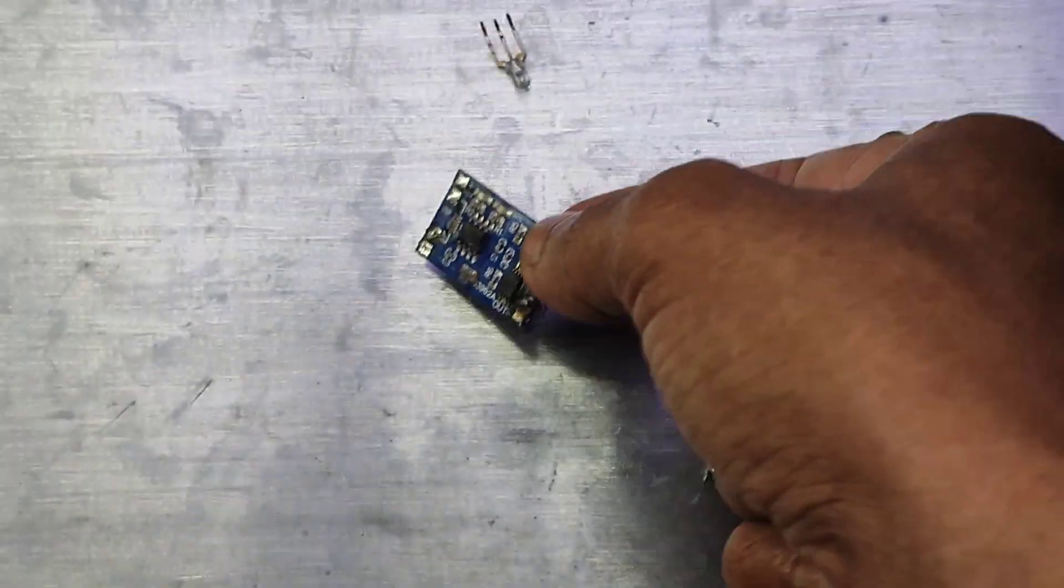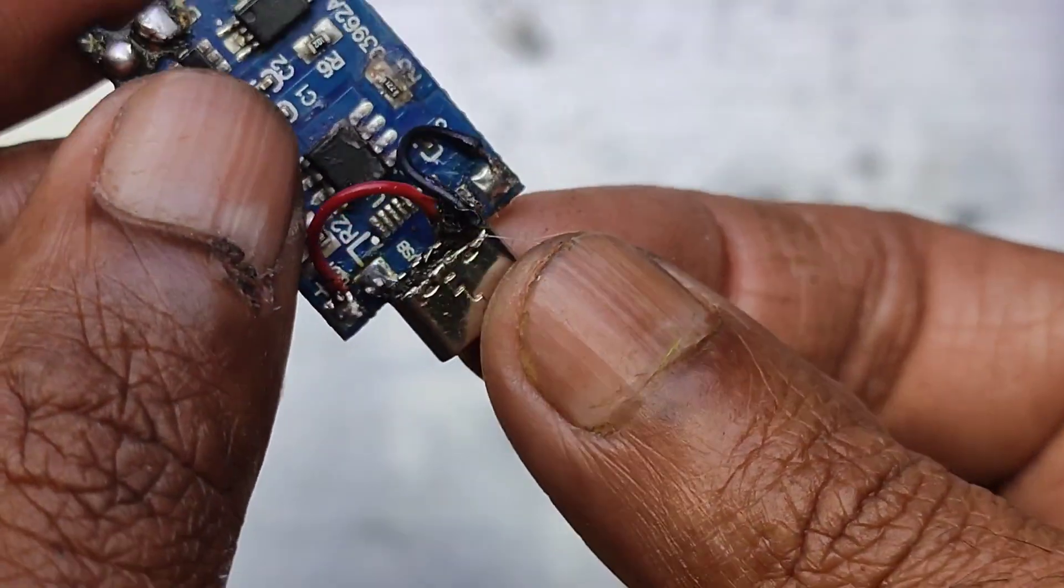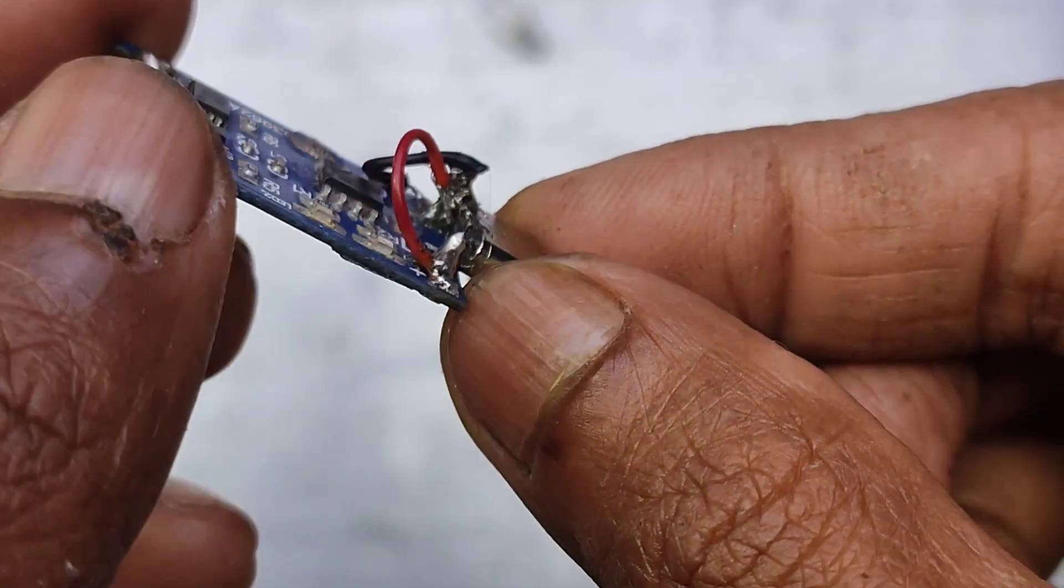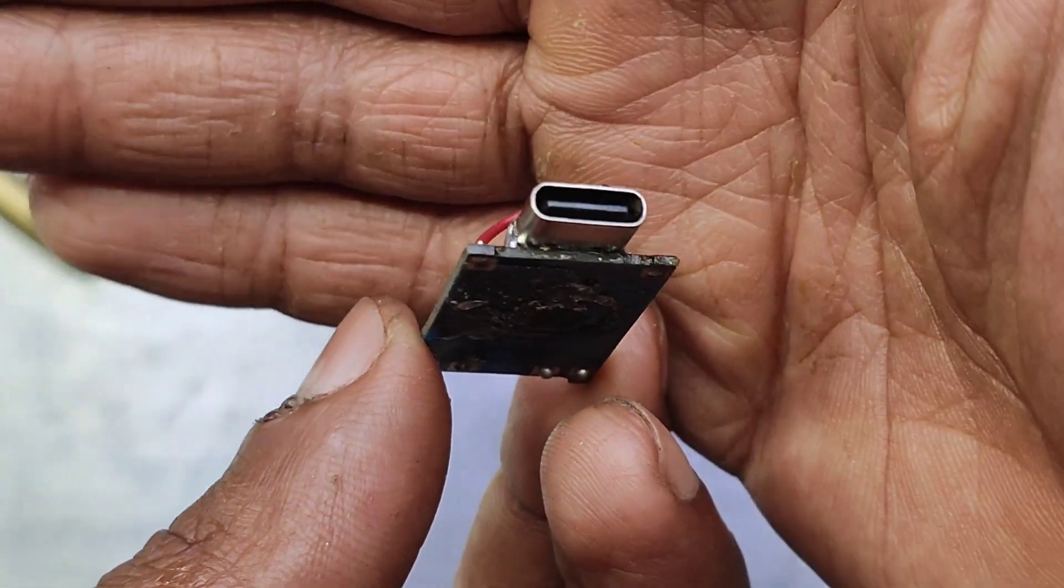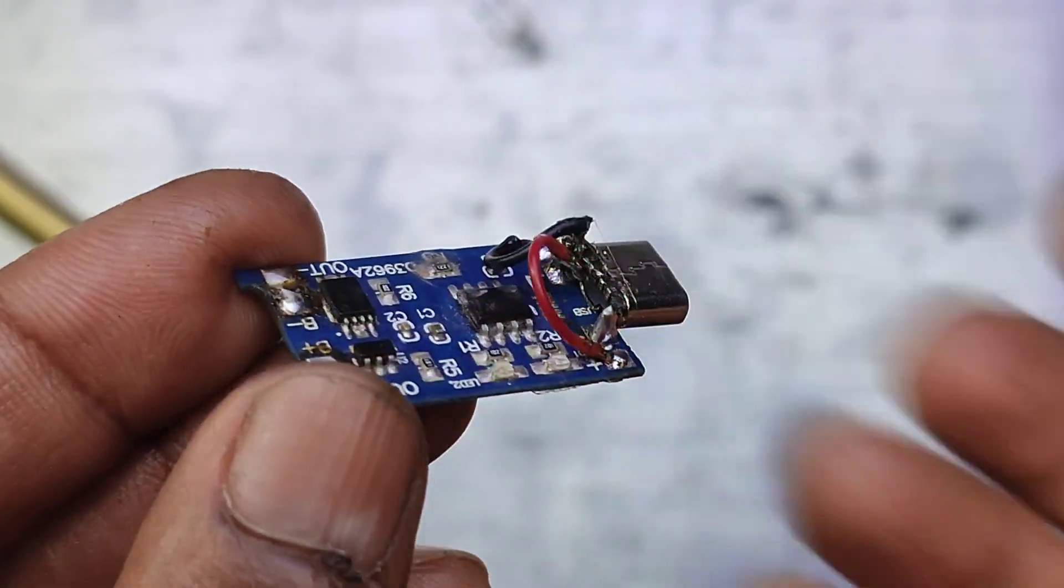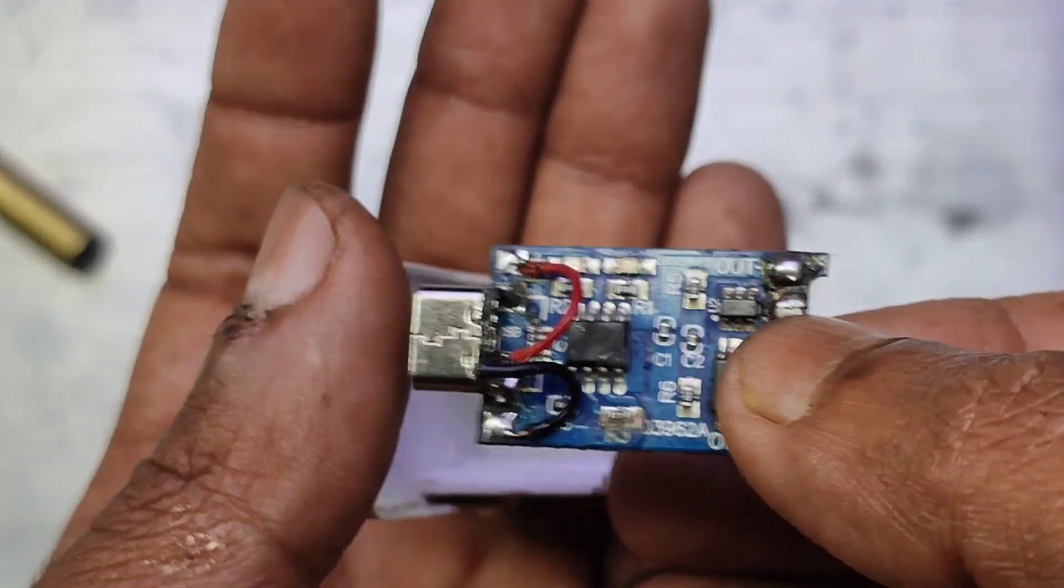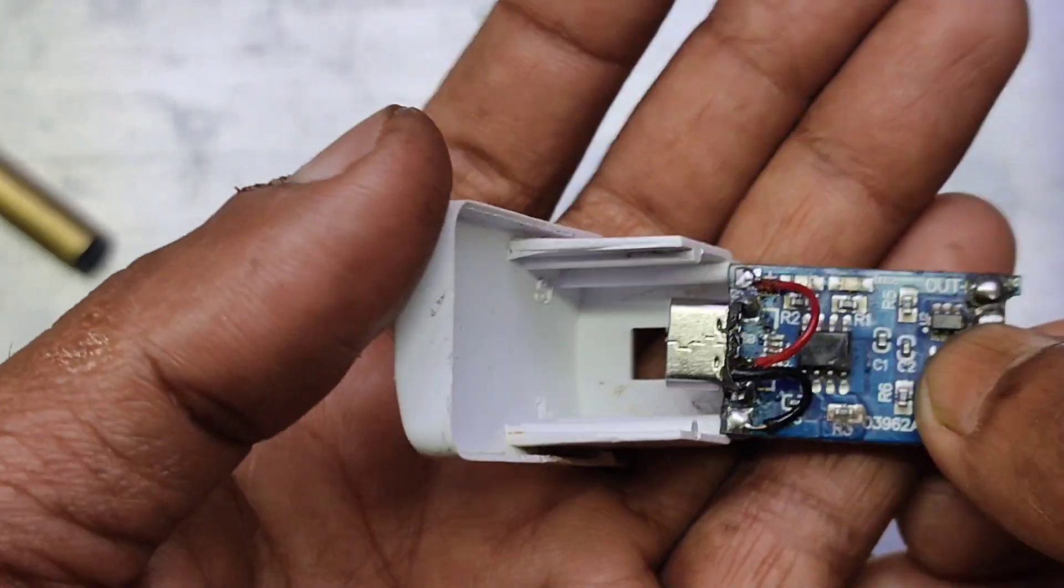Here you can see the connector attached to the charging module. I have only connected the power wires since the data lines are unnecessary for this project. I am going to attach the charging module to this side cover, but first I need to modify it.